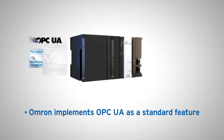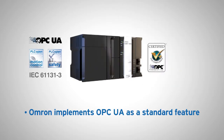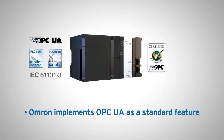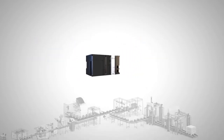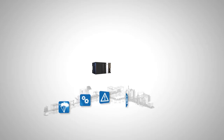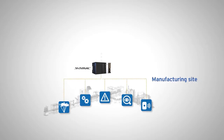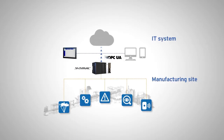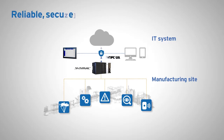Omron implements OPC UA as a standard feature, an information exchange standard for industrial communication. NJ5 with OPC UA provides open and direct communication between machine and IT systems. This solution ensures reliable, secure and easy communication.